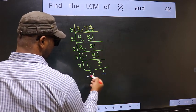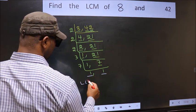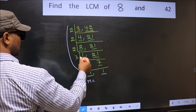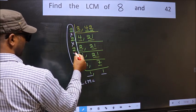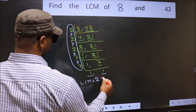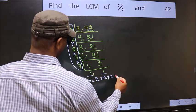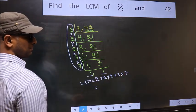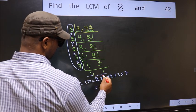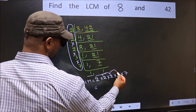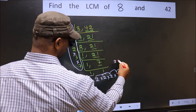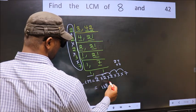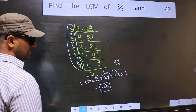We got 1 in both places, so our LCM is the product of these numbers. That is 2 into 2 into 2 into 3 into 7. So let us multiply: 2 into 2 is 4, into 2 is 8, into 3 is 24, into 7 is 168. So 168 is our LCM.